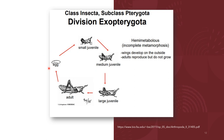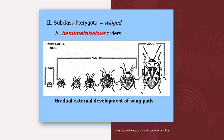The life stages of hemimetabolous insects include the egg, small juvenile, medium juvenile, large juvenile, and the adult. The subclass Pterygota includes most of the world's insect species, from the Greek 'pteron' meaning wings. The division of Pterygota exhibiting hemimetabolous or incomplete metamorphosis is the division Exopterygota. An example is the bug, which shows gradual external development of wing pads through nymphal stages.